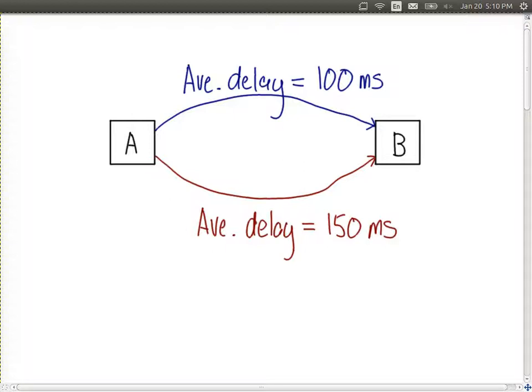So A can send packets to B via the blue path, path 1, or it can send packets to B via the red path, path 2.